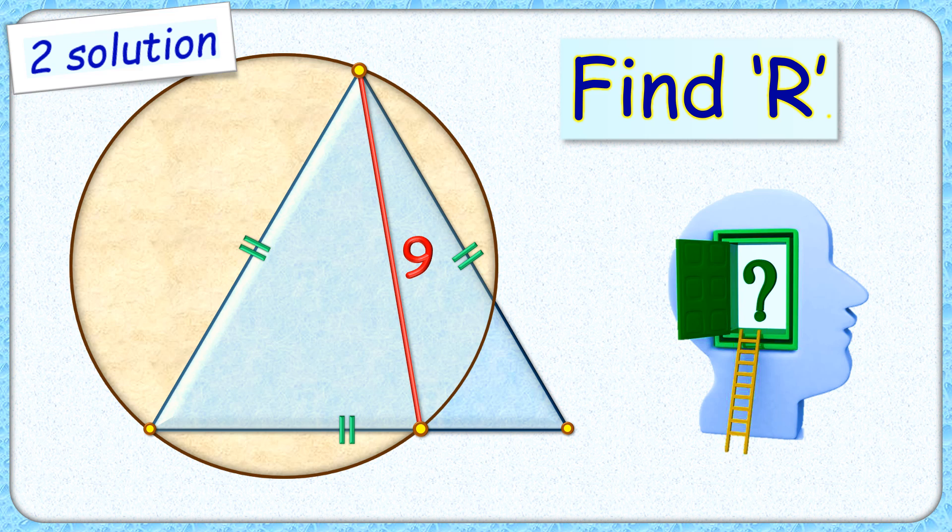Welcome everyone. This interesting question given to us is an equilateral triangle and a circle, and the length of this red line segment is 9 cm.